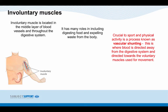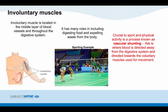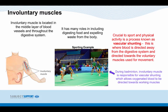Here you can see involuntary muscles. In this sporting example, vascular shunting is happening. The blood is moving away from the player's digestive system, which allows more blood to be pumped towards the voluntary muscles — for example, the bicep and tricep — to allow for the drop shot to occur in this movement. During badminton, involuntary muscles are responsible for vascular shunting, which allows oxygenated blood to be directed towards working muscles.